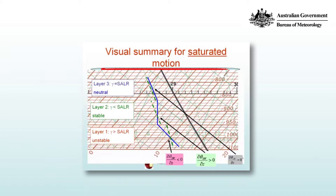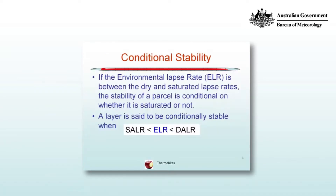It's easier by inspection to compare the environmental lapse rate to that of a saturated adiabat and see whether or not the parcel is going to be warmer when lifted than its environment. If the environmental lapse rate is between the dry and the saturated lapse rates, the stability of the parcel is conditional on whether it is saturated or not. We can define conditional instability when the environmental lapse rate is greater than that of the saturated adiabat but less than that of the dry adiabat.